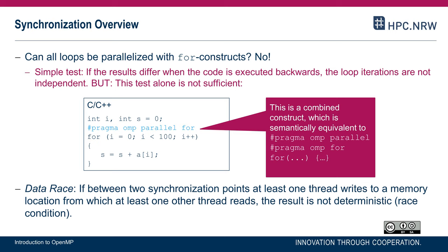In this particular code the problem is that we have only one variable s, and in each iteration a thread reads s, adds something to it, and writes the result back. If two threads simultaneously read s, add something, and write it back, one thread will overwrite the value written by the other, producing an incorrect result.